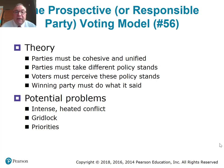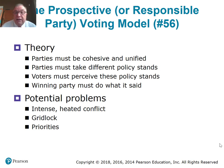The first is the prospective, or responsible party voting model. Question number 56: what is the prospective voting model? This is where voters make a decision based on what government will do in the future. It needs parties to be cohesive, voters must understand the stands of the two parties, and then the winning party has to do what they say. This can create heated conflict between parties, as it often does in Europe, and possibly even gridlock. Most people consider this the better of the three models.